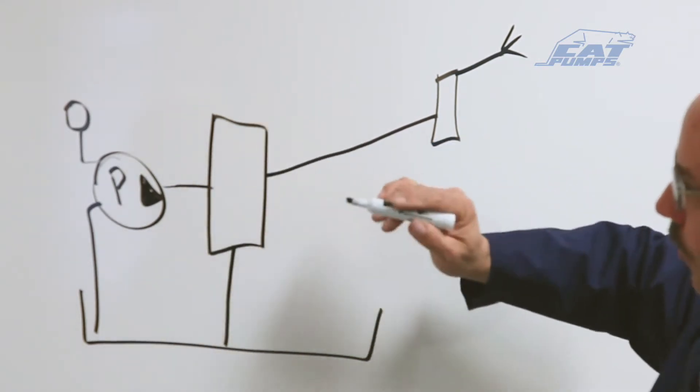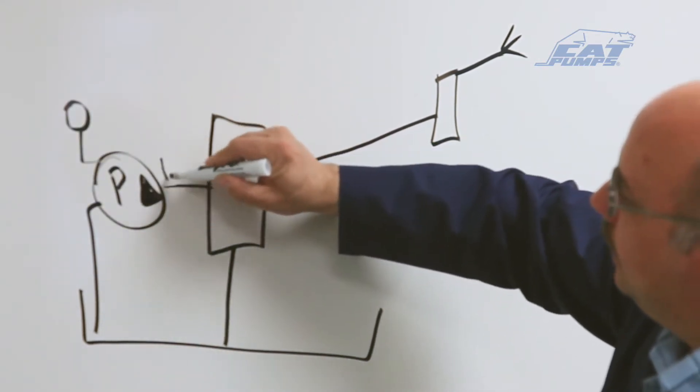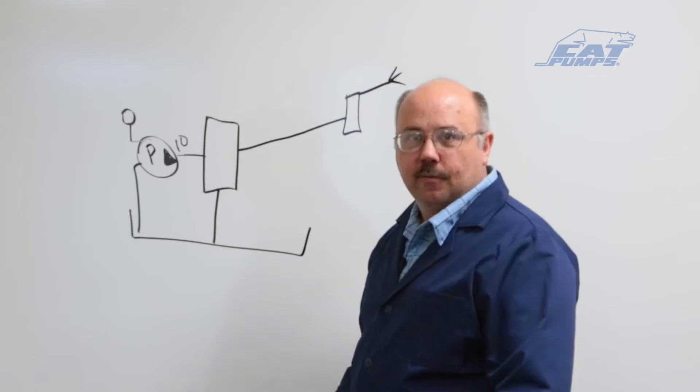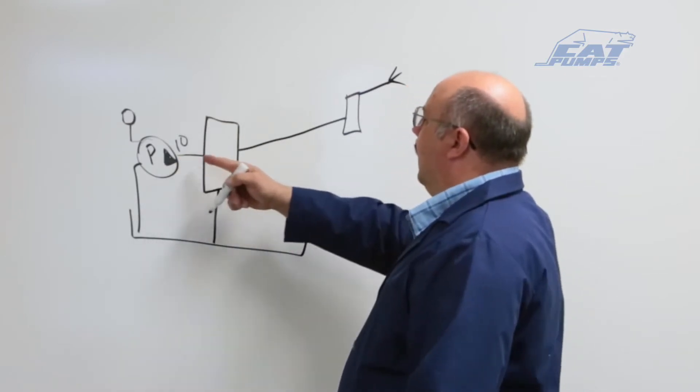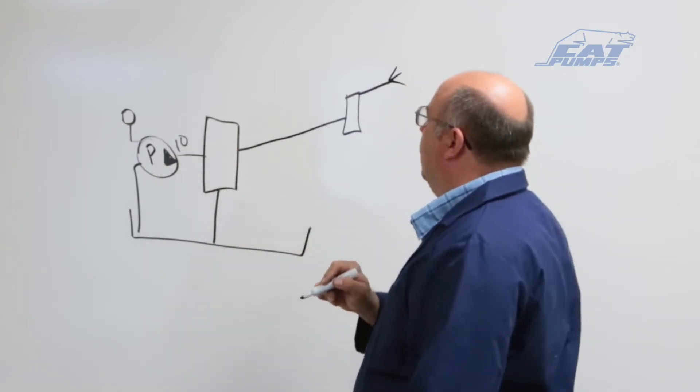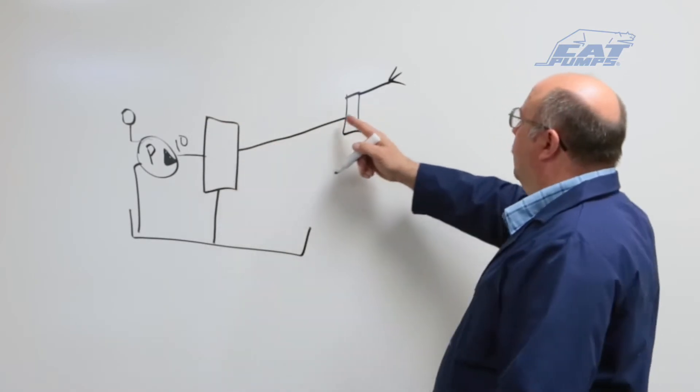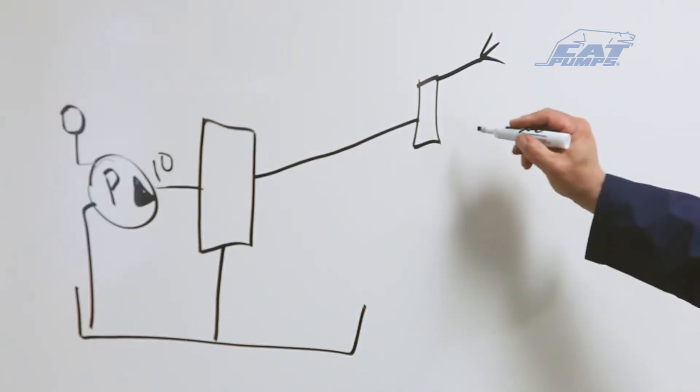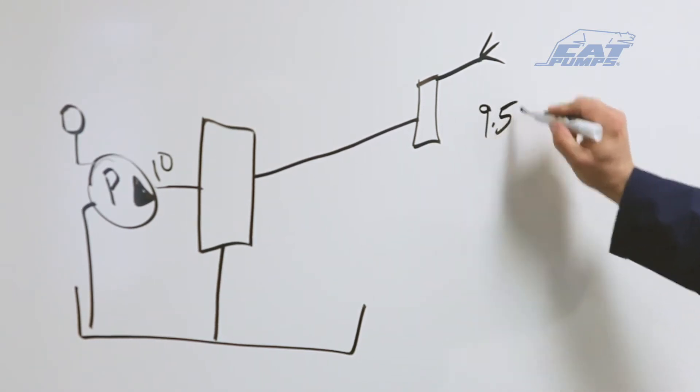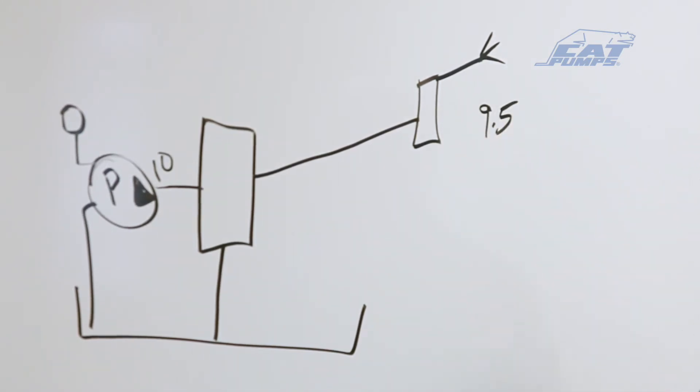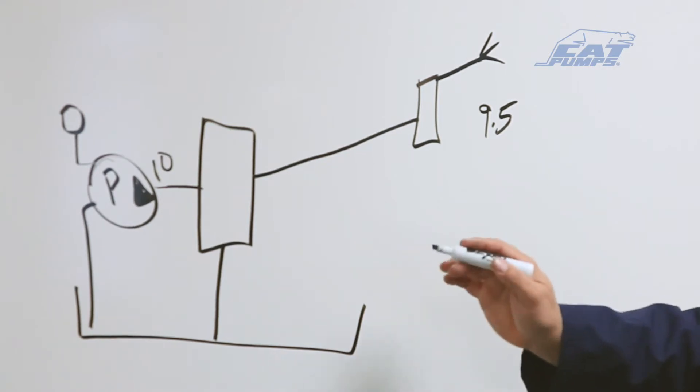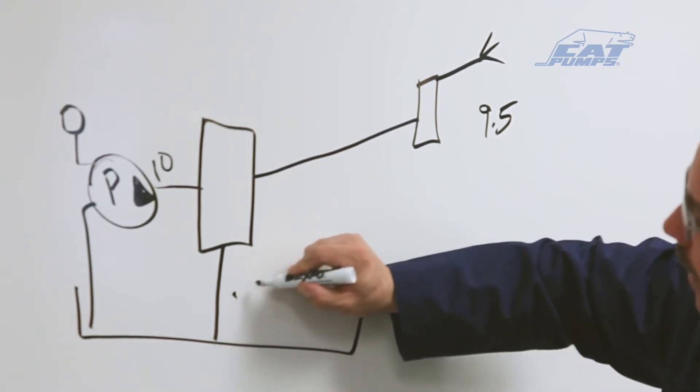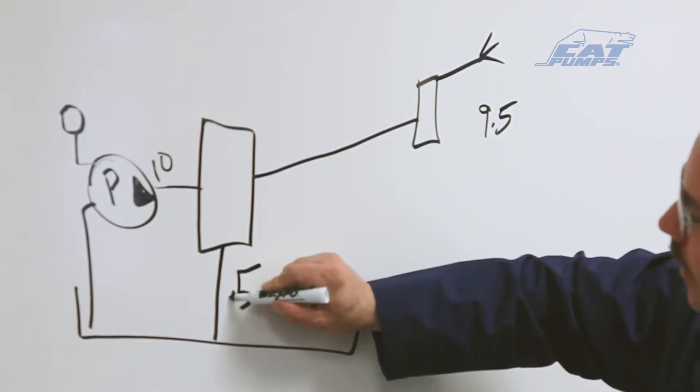Typically, for example, we're going to run a 10 gallons per minute pump. So I'll put a 10 there to represent the flow in this line—the water coming out of the pump. The water that goes up to the trigger gun will usually take most of the water flow. So in this example, we're going to do 9.5 gallons out the nozzle, which would leave us with half a gallon per minute going down the bypass.